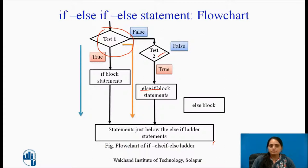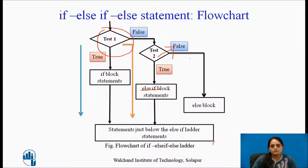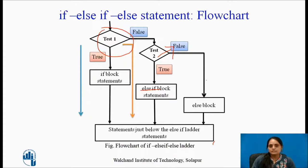If test two also happens to be false, the corresponding else block of statements will be executed. It must be noted that if test one evaluates to false, the program continues to check test two. If test two is also false, by default the else block will be executed — meaning no further condition will be checked.